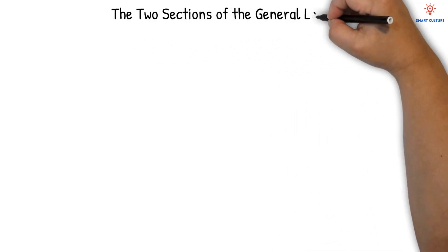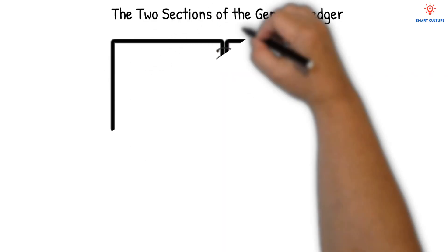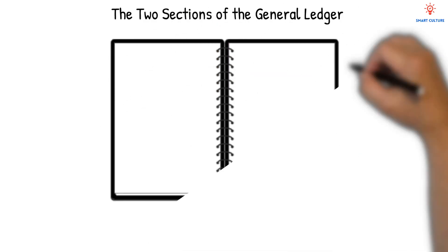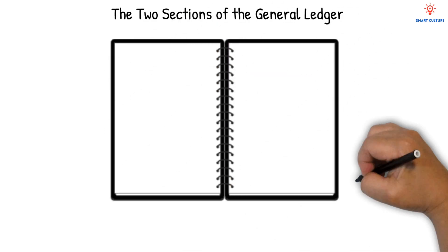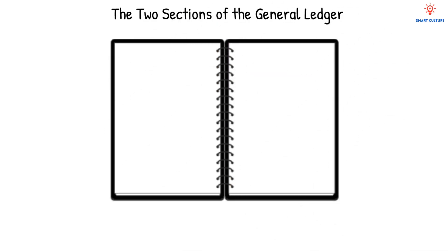In this video we will discuss the two sections of the general ledger. The general ledger is like the brain of a business's accounting system, but did you know it's actually divided into two main parts? Let's find out why.